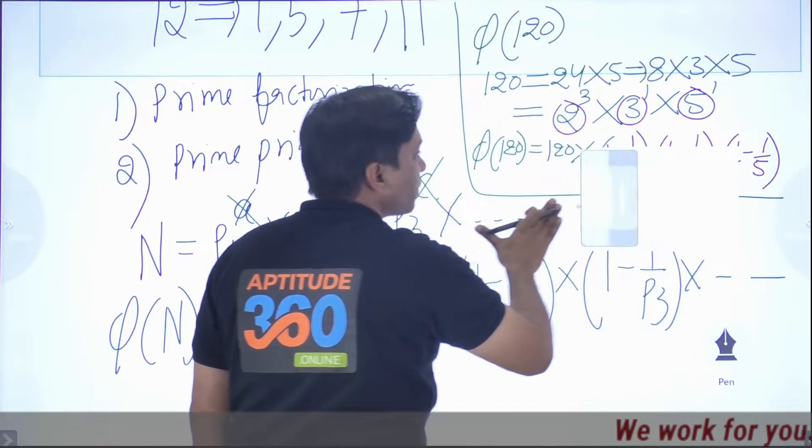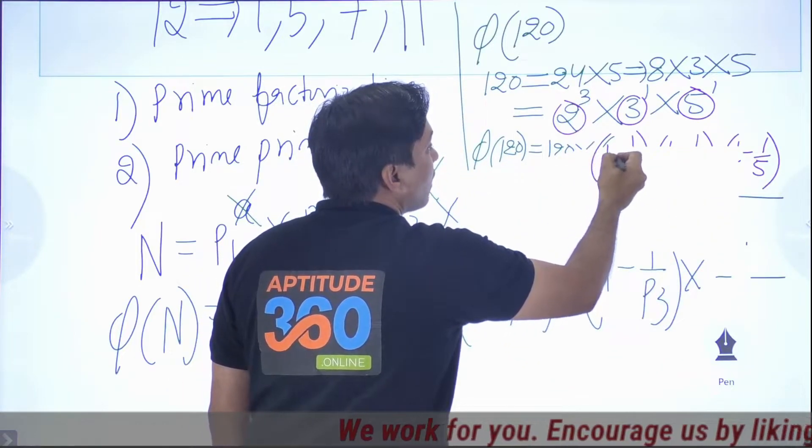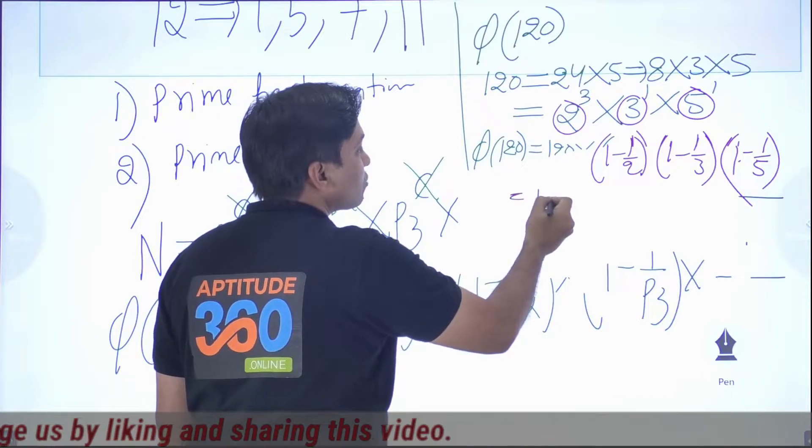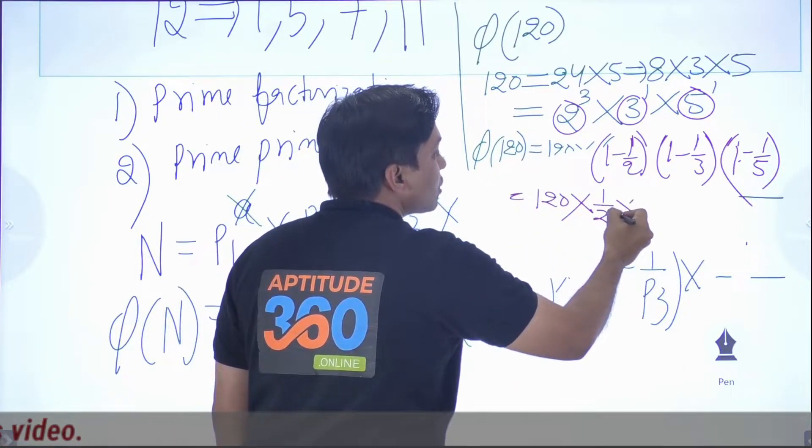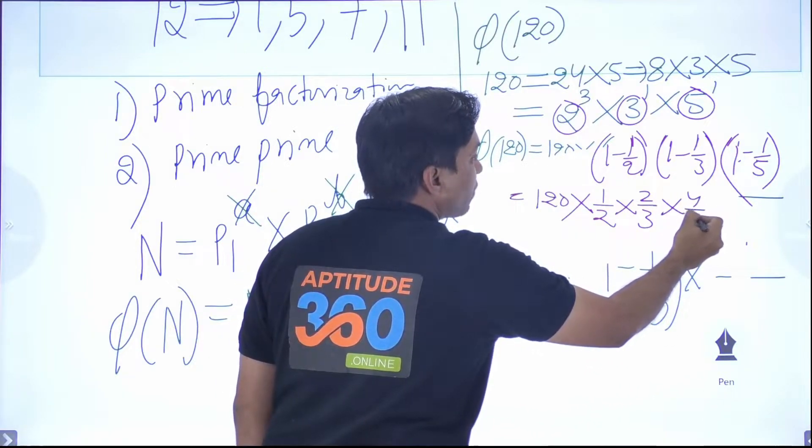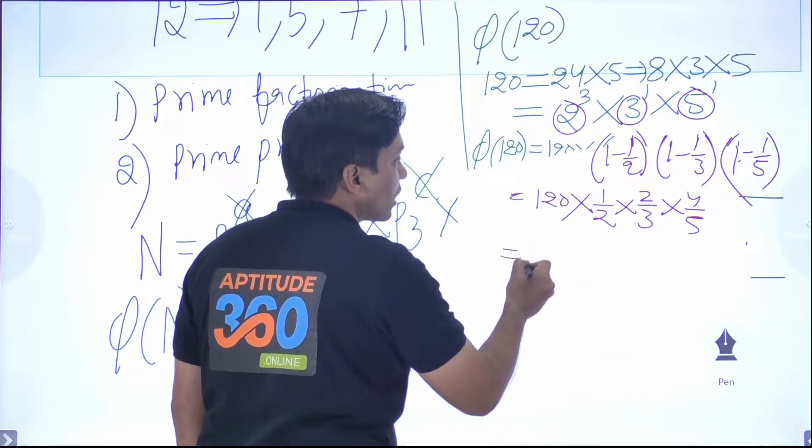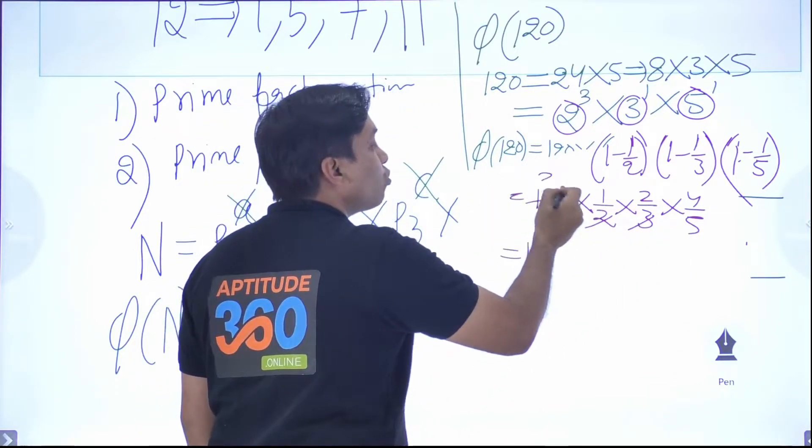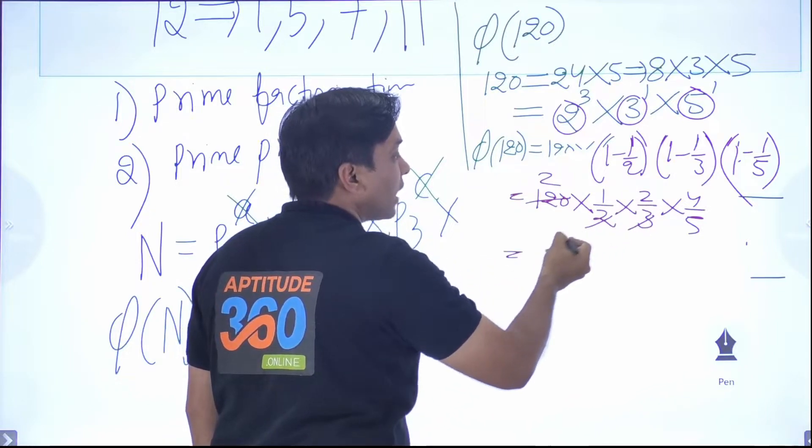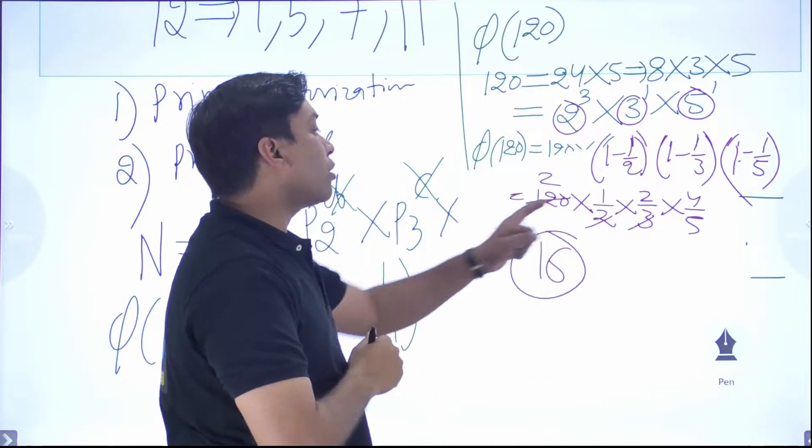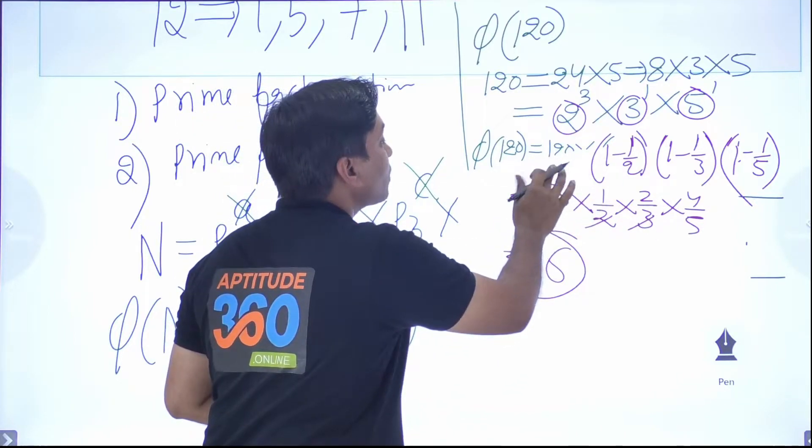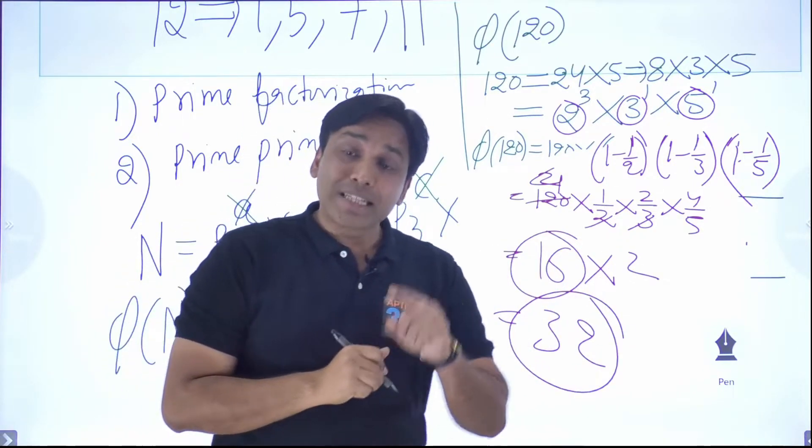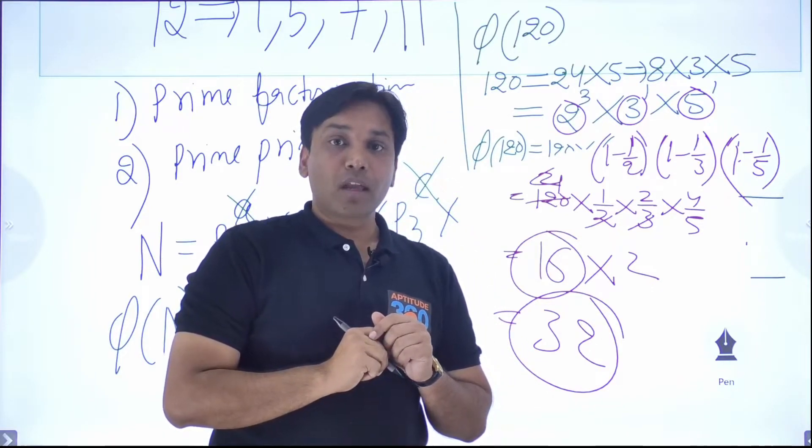So what do you have is 1 minus 1 over 2 and 1 minus 1 over 3 and 1 minus 1 over 5. And if you happen to simplify this thing, this is going to be 120 and this is half and this is 2 over 3 and this is 4 over 5. And if you need to figure it out what is the answer, so this is going to be, if you simplify this thing, probably 8 into 2, 2 times 3 is 6, 6 into 5 is 30. So there are 32 numbers that are less than 120 and are coprime to 120. That's it.